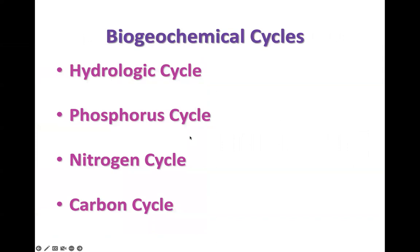Biogeochemical cycles are factors we must take into account as we examine ecosystems. We have the hydrologic cycle, phosphorus cycle, nitrogen cycle, and carbon cycle — a number of different biogeochemical cycles that are essential for maintaining balance among ecosystems.